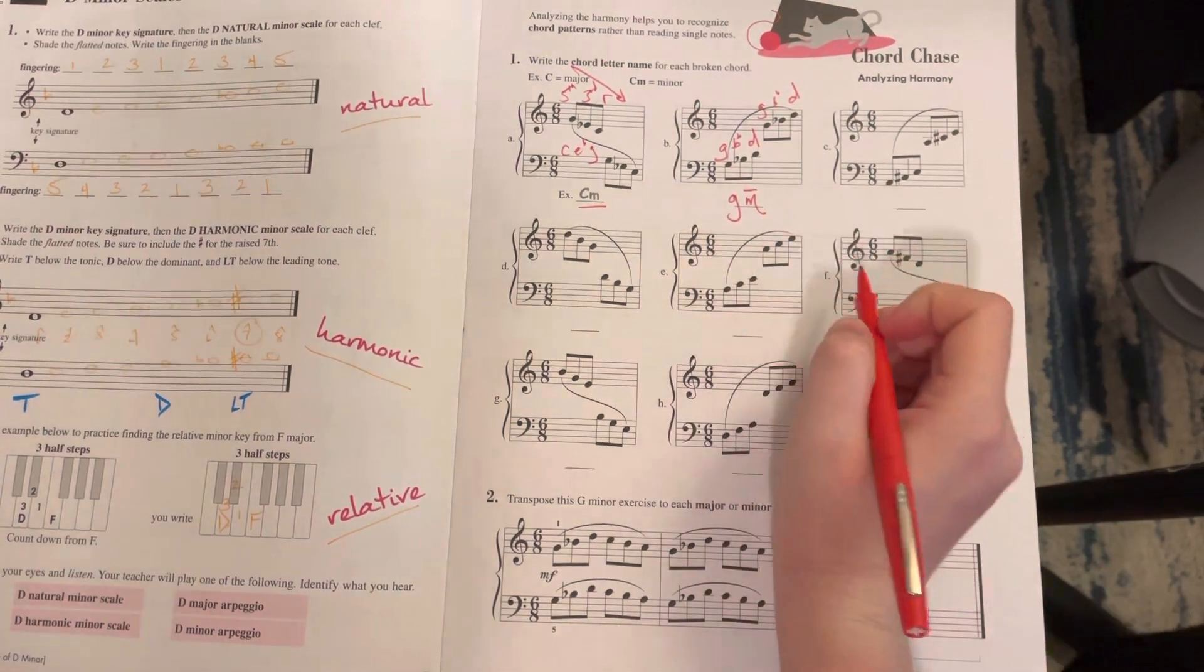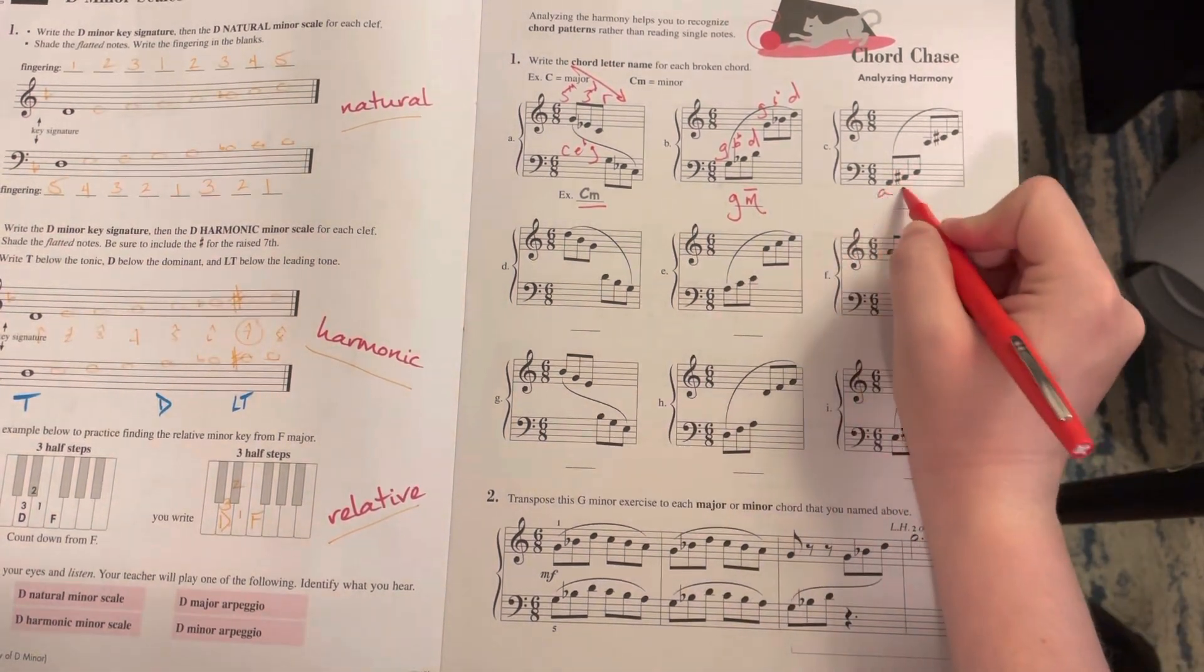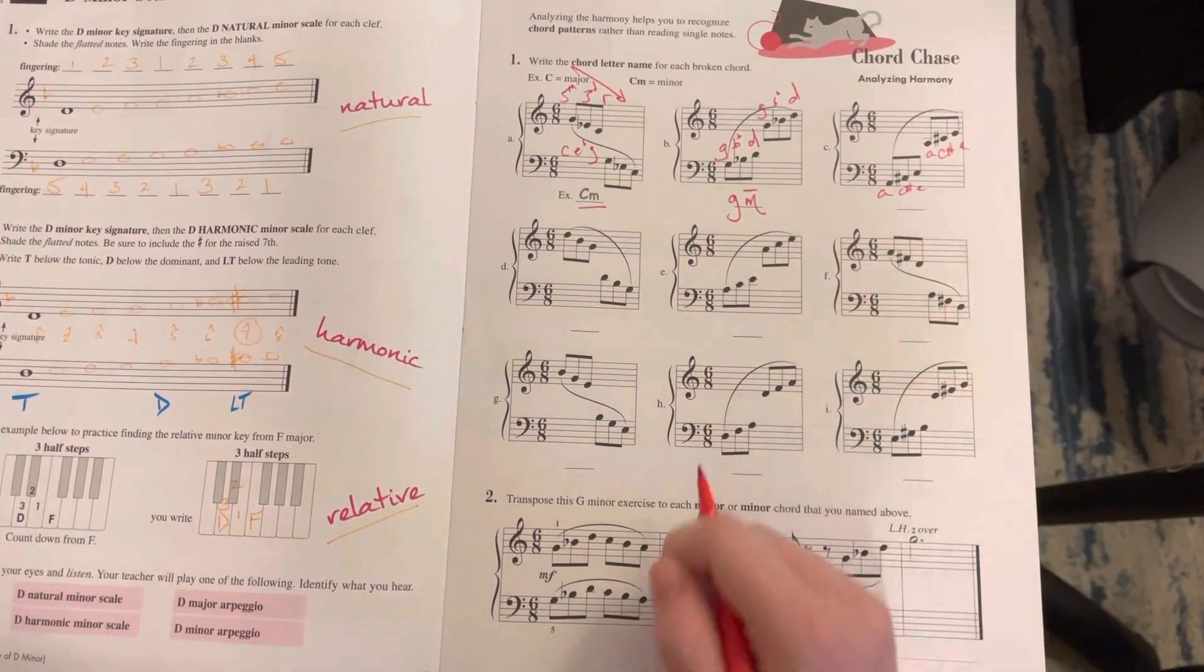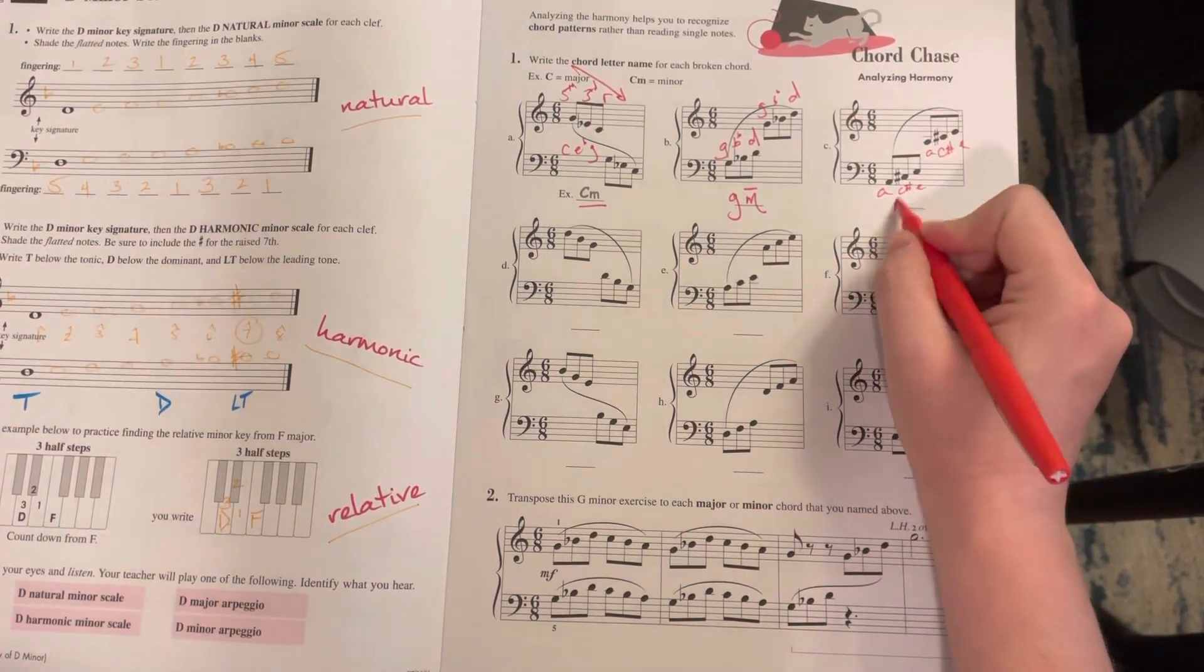We have C sharp, E, A. They're all stacked on thirds, so A, C sharp, E is an A major chord.